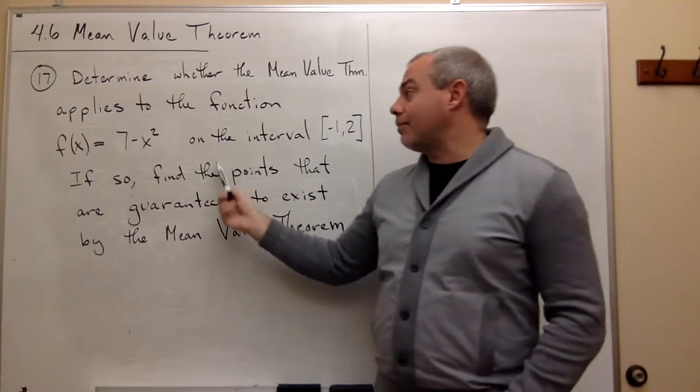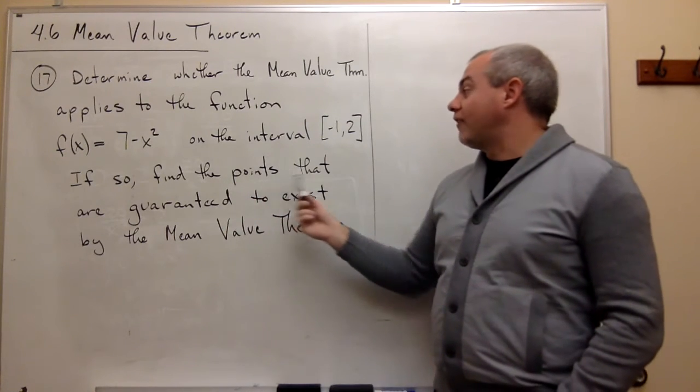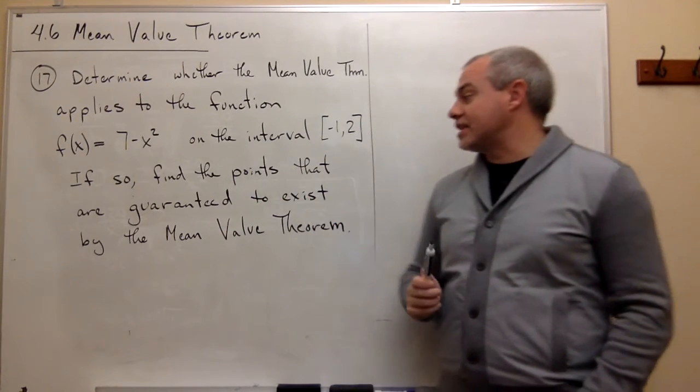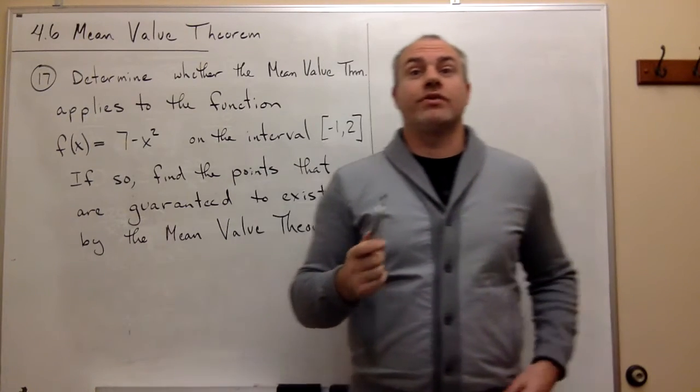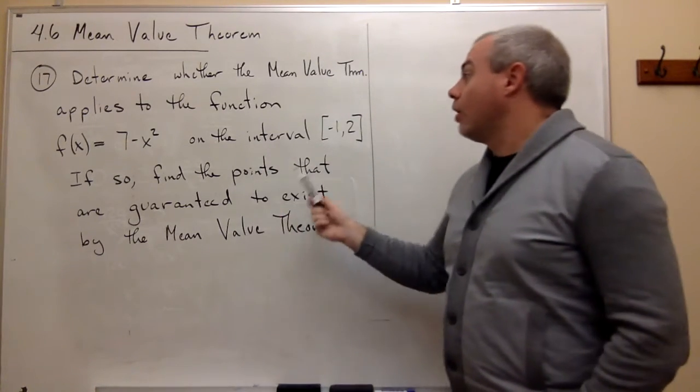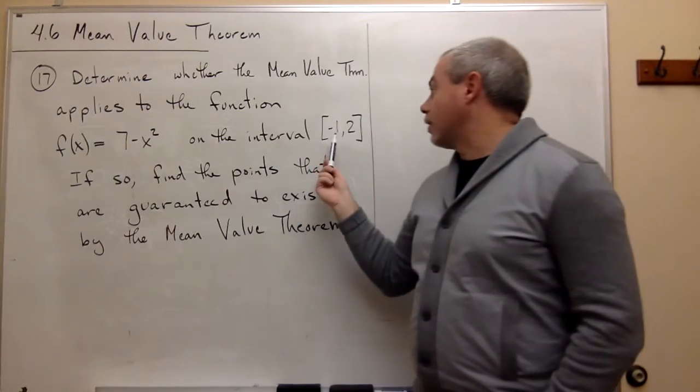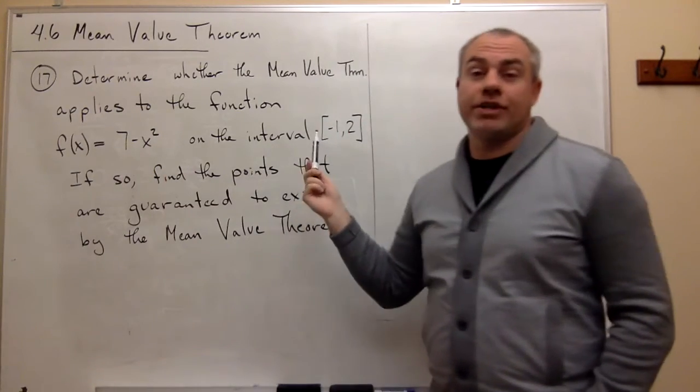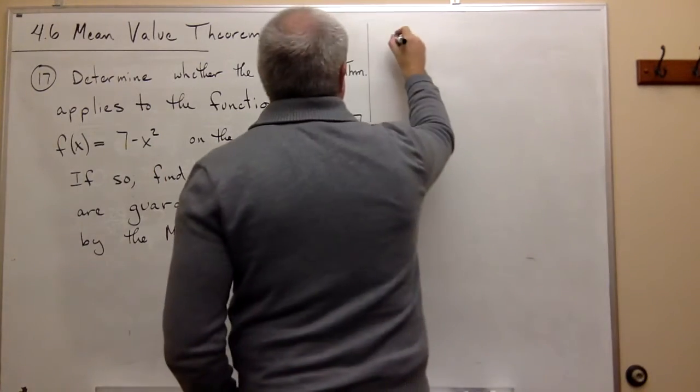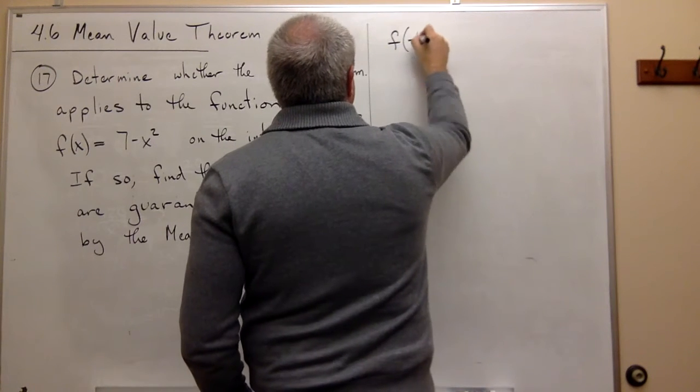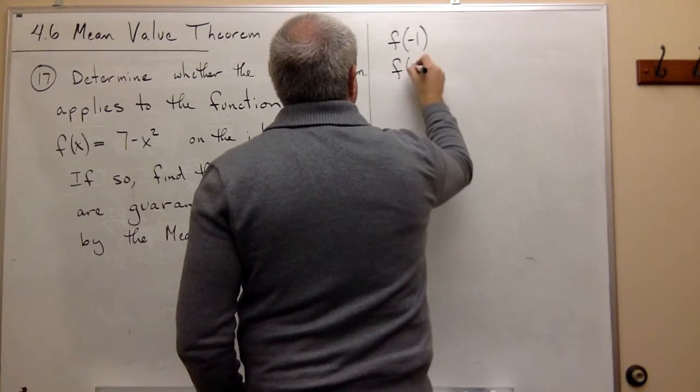So the second part of the problem is find the points that are guaranteed to exist by the mean value theorem. And the way that we're going to do that is, first of all, we have to figure out what is f of minus 1, and what is f of 2. So let's figure that out real quick. f of minus 1 and f of 2.